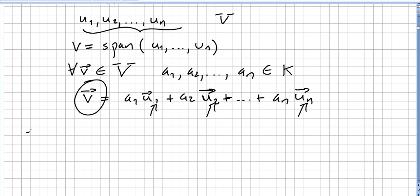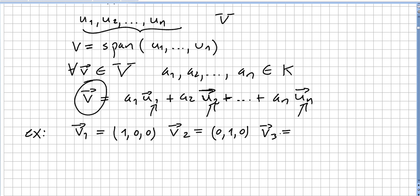For instance, let us pick an exercise. Let us say we have vectors v1 = (1, 0, 0), v2 = (0, 1, 0), and v3 = (0, 0, 1). Let us prove that these three vectors span the vector space R³.